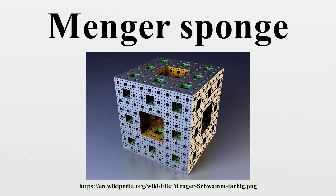This is a level-1 Menger sponge. Repeat steps 2 and 3 for each of the remaining smaller cubes, and continue to iterate ad infinitum. The second iteration will give you a level-2 sponge, the third iteration gives a level-3 sponge, and so on.